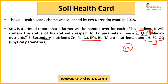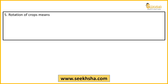Directly question is tarike se bhi poochha ja sakta tha — for example: which parameter is NOT covered under Soil Health Card? Options mein nitrogen, phosphorus, potassium aur D option molybdenum, E option pH. Answer hota molybdenum, kyunki woh in 12 parameters mein nahi aata. Is tarike se bhi paper mein poochha ja sakta hai.